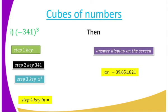We have an example: negative 341 cubed. When we press the keys — negative, then 341, then x cubed, then equals — the answer will be displayed on the screen, which is negative 39,651,821. Remember, the laws of integers still apply: negative times negative times negative gives a negative result. That is the reason why the calculator gives you a negative answer.